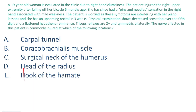Finally, a 19-year-old woman is evaluated in the clinic for right hand clumsiness. She injured the right upper extremity after falling off her bicycle six months ago and has since had pins and needles sensation in the right hand associated with mild weakness. Physical exam shows decreased sensation over the fifth digit and a flattened hypothenar eminence.